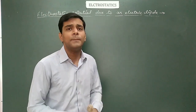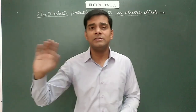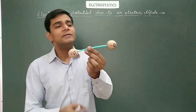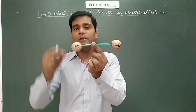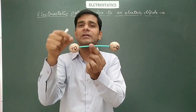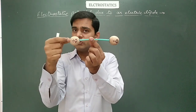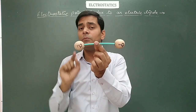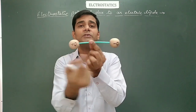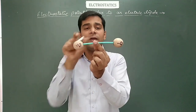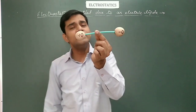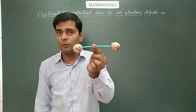The electrostatic potential at a particular distance r from a given charge q is expressed as V = kq/r, where k = 1/(4πε₀). For a system of multiple charges, the total potential at a point is the algebraic sum of the individual potentials due to all charges, because potential is a scalar physical quantity.